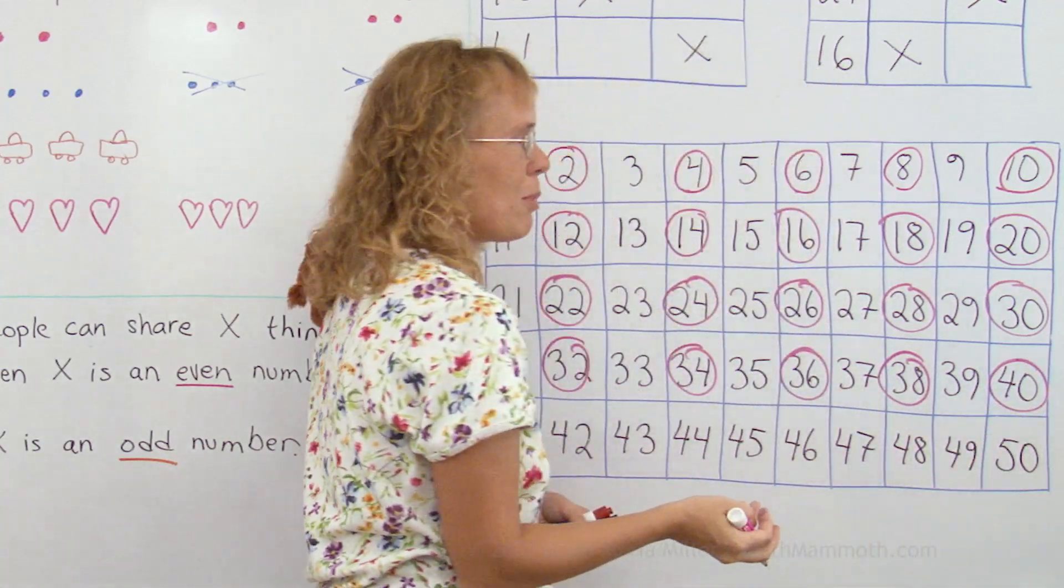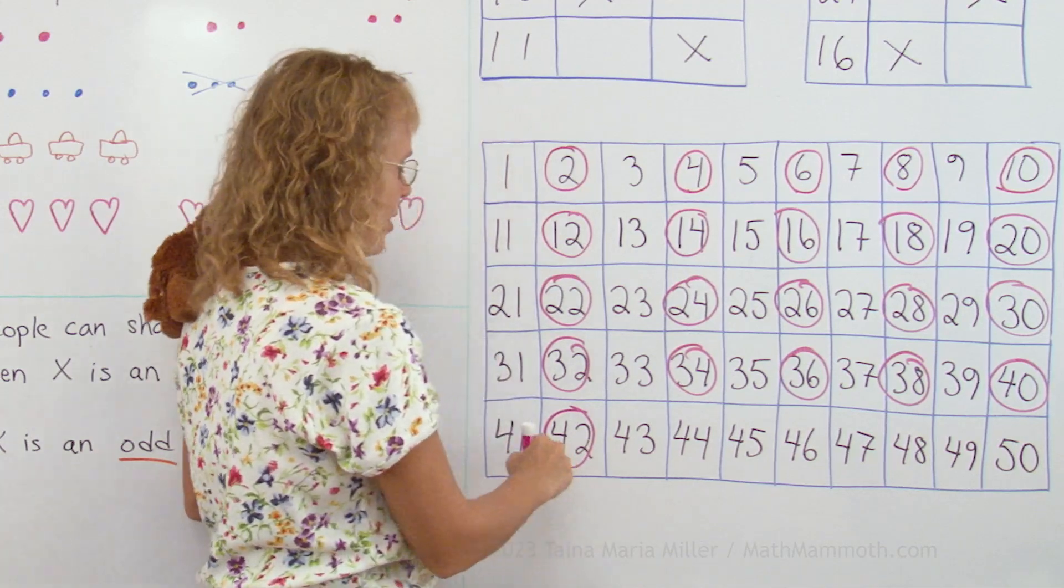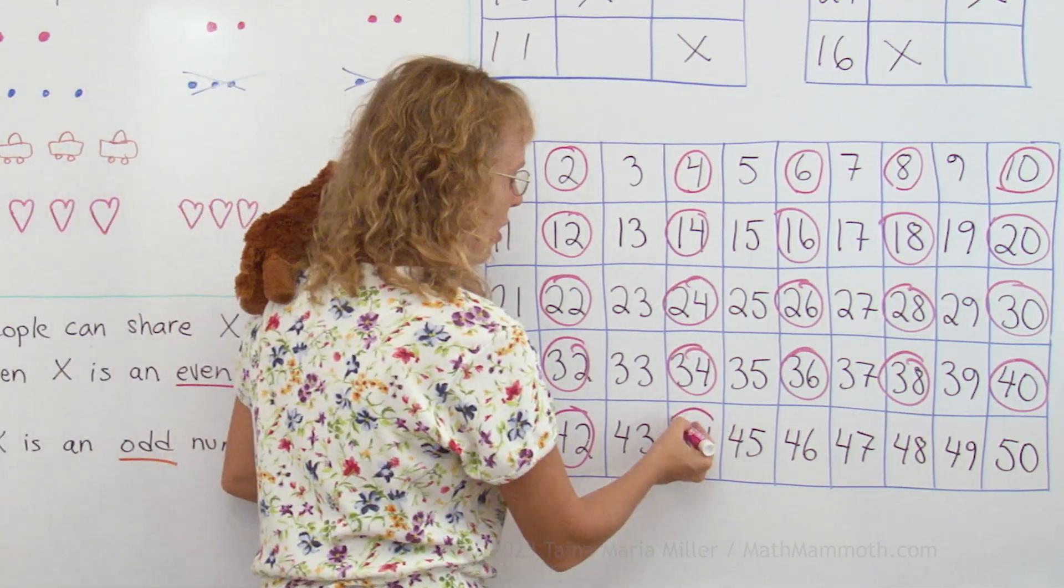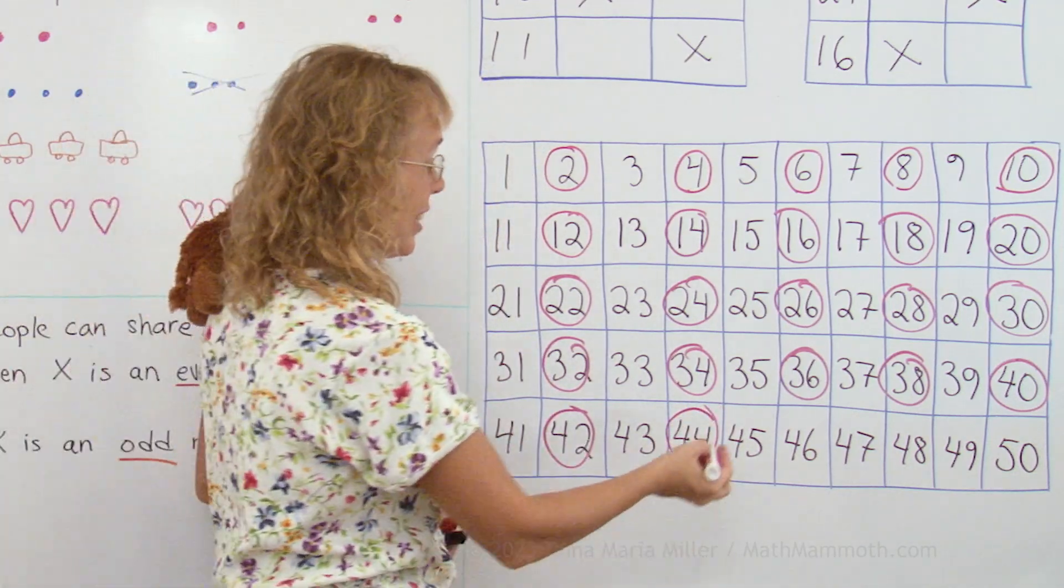40 is an even number, because it would be 20 and 20, right? 42 would be 21 and 21, 44 would be 22 and 22, and so on.